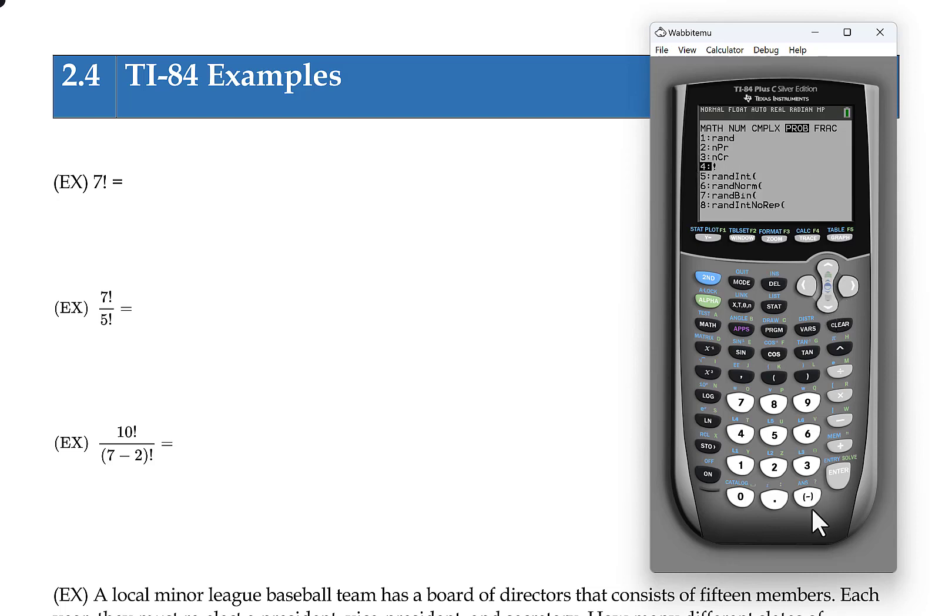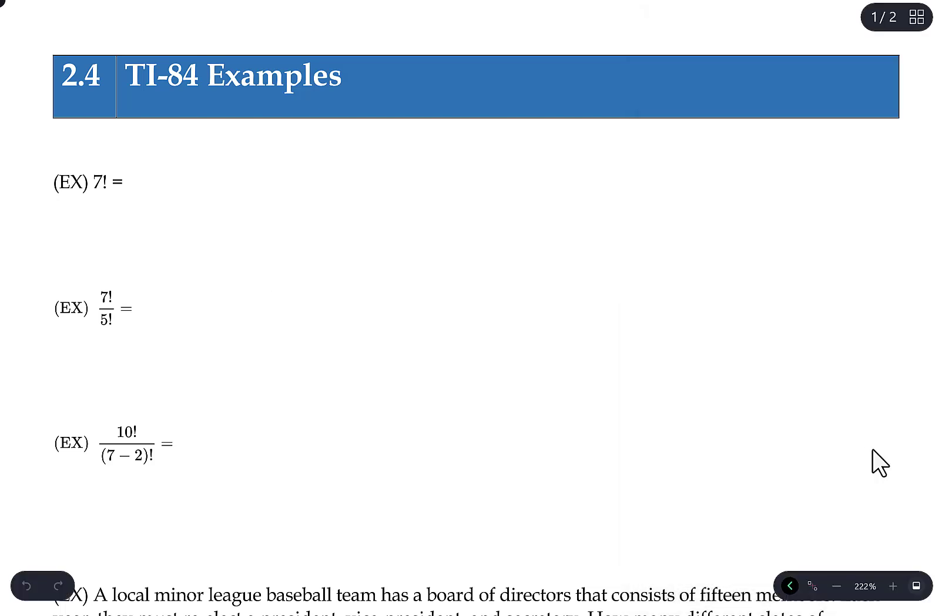and the fourth item down should be an exclamation point, which is factorials. So if you put that exclamation point after the number, the calculator knows what to do. It will take 7 times 6 times 5 times 4, and so forth, and then multiply that all together and give you 5040.